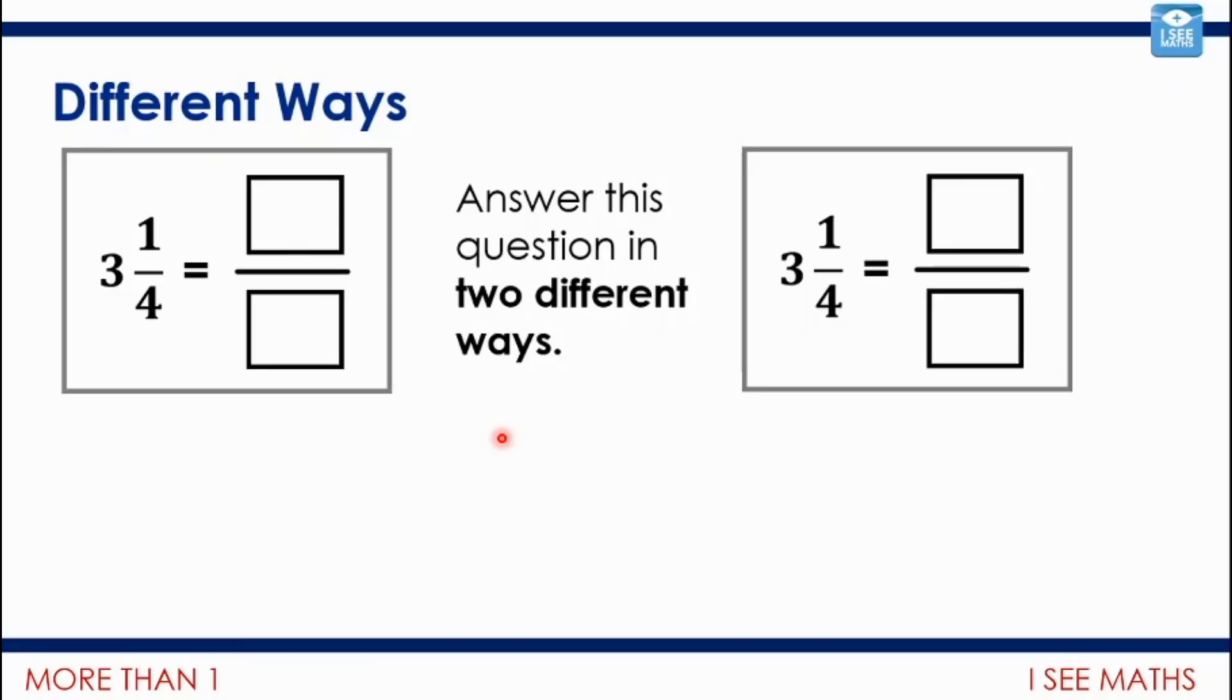Okay, so let's have a look at 2 possible answers. Well, 3 1/4. In each 1, there's 4 quarters. So in 3, there's 12 quarters. And that other quarter, 13 quarters.